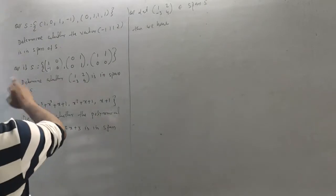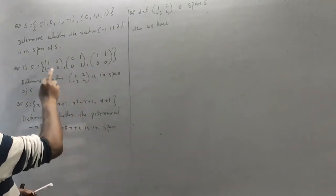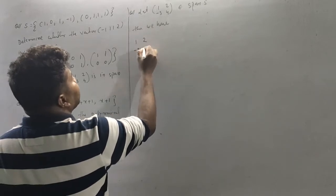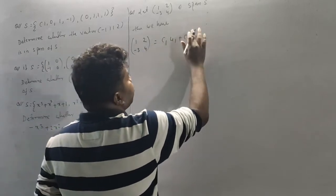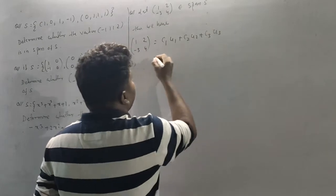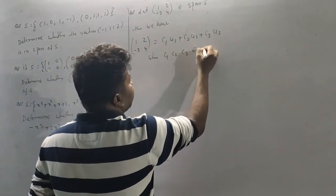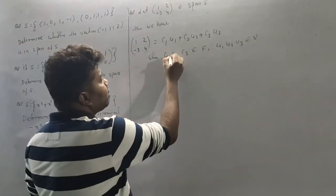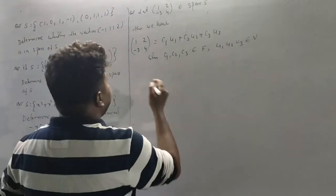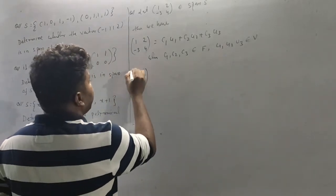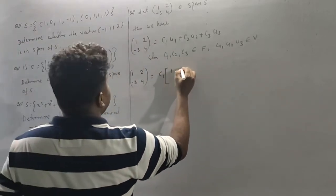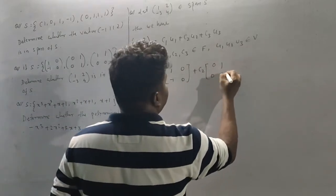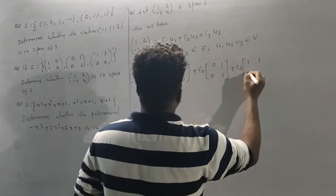For the next problem, we need to check whether the vector (1, 2, -3, 4) belongs to Span S, where S consists of three vectors. We write: (1, 2, -3, 4) = C1·U1 + C2·U2 + C3·U3, where C1, C2, C3 belong to F and U1, U2, U3 belong to V. The vectors U1, U2, U3 include components (1,1,0,0).